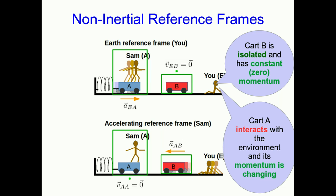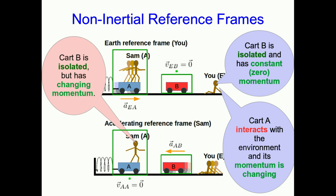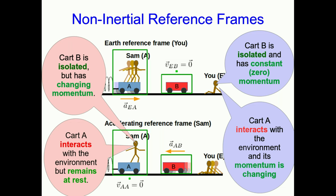Now let's see things from Sam's accelerating, non-inertial reference frame. Sam can see just as well as you that cart B isn't interacting with the environment — it's a low-friction cart on a surface, so it's isolated. But according to Sam, its momentum is changing because it appears to be accelerating towards Sam. Also, Sam can see that cart A is interacting with the environment — there's that great big spring pushing on it — but as far as Sam is concerned, cart A is remaining at rest relative to Sam. Both of these are violations of the law of inertia. The law of inertia doesn't apply in a non-inertial reference frame, which makes non-inertial reference frames often inconvenient. You should avoid defining axes in a non-inertial reference frame.